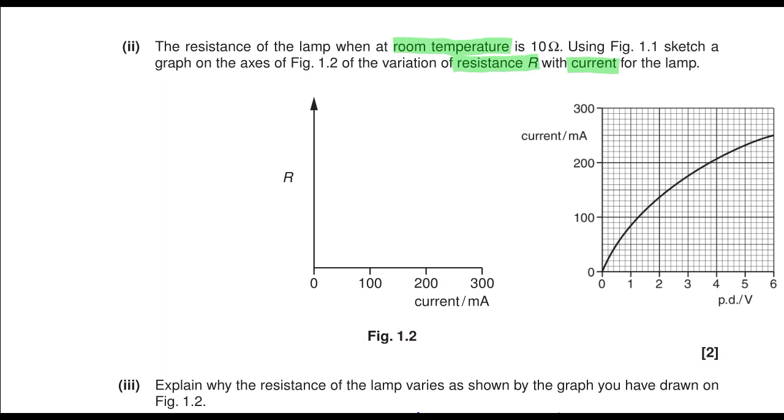If we look at this graph showing current against PD, we can see that there is a decreasing gradient. That will show us that the resistance is increasing, and that comes from the fact that resistance is given by V over I, which means that the gradient represents 1 over the resistance.